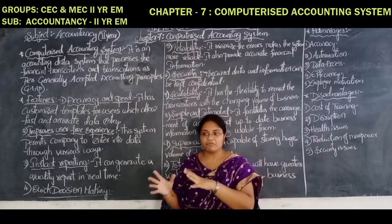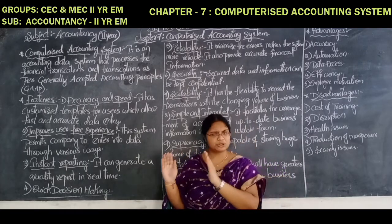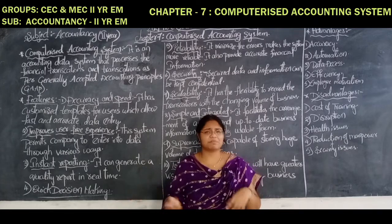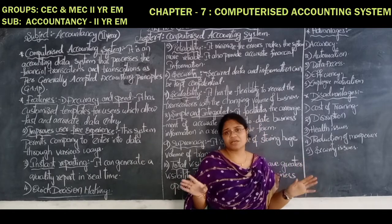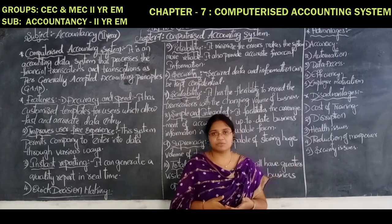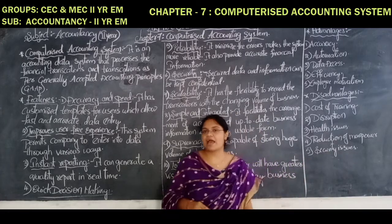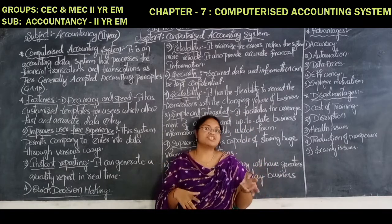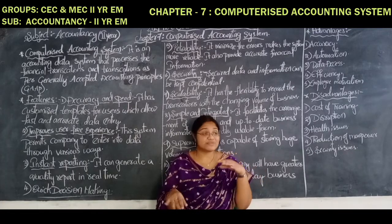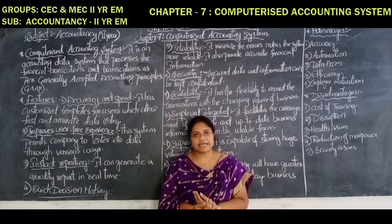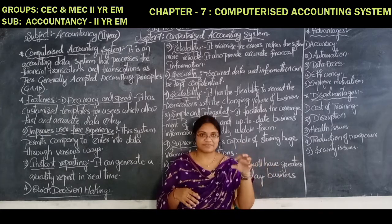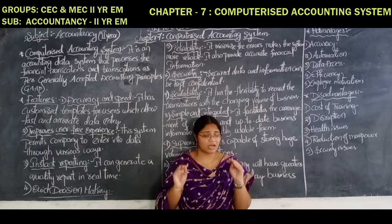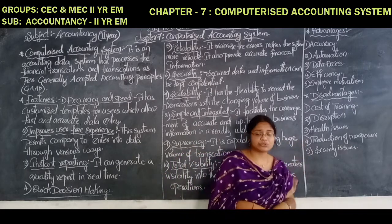Reducing manpower: for the book of company final accounts, a minimum of two or three accountant employees are needed. Whereas with the computerized accounting system, there is no need for that many members — only one person and one computer is more than enough to enter transactions and get the result. It means that it is also reducing employment. Security issues: there will be chances of hacking the systems. If anyone hacks the system or the password with which the accounting system is operated, and they change the software, then we can't do anything until we know the new password they have set. There will be a number of security issues in the computerized accounting system.